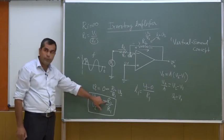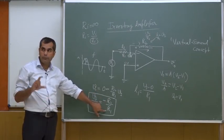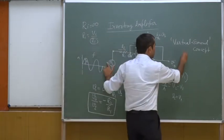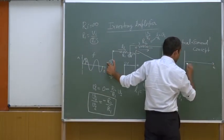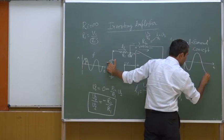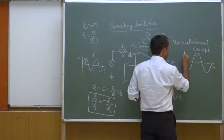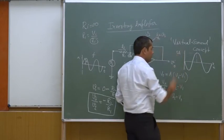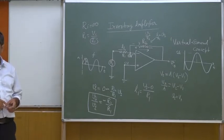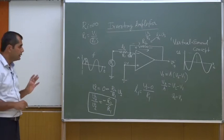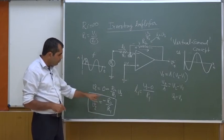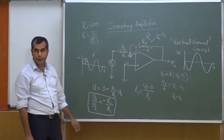This is the voltage gain for an inverting amplifier. It is called inverting because the output voltage is 180° out of phase with the input voltage. For example, if R2 is 5 kΩ and R1 is 1 kΩ, the gain is 5, and the output signal is 180° phase shifted with amplitude 5 times A.